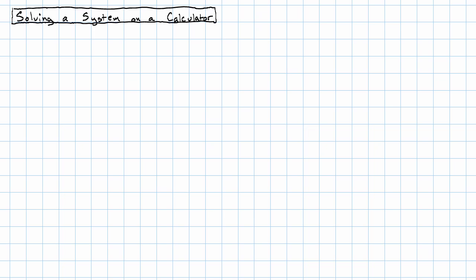But what if we have a system that looks something like this? Looking at this system of equations, I don't really want to carefully draw a graph of this system. I don't want to draw a graph that goes out to negative 250 on the y-axis, for example.